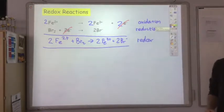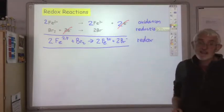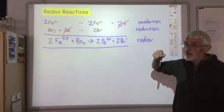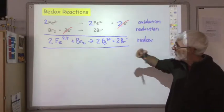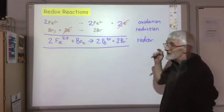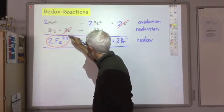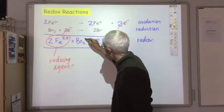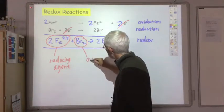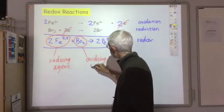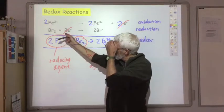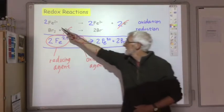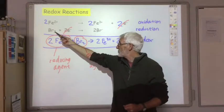You need to be able to identify oxidising and reducing agents from redox equations. The Fe2+ underwent oxidation — it lost electrons — and those electrons caused the bromine to be reduced. So the thing that is oxidised is the reducing agent; Fe2+ is the reducing agent. The Br2 is the oxidising agent because its presence allowed Fe2+ to lose electrons. The thing that gets oxidised is the reducing agent, and the thing that gets reduced is the oxidising agent.